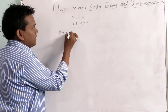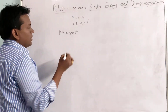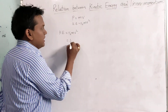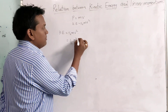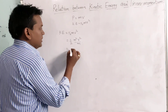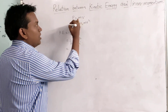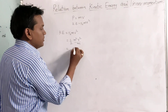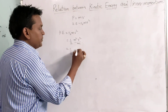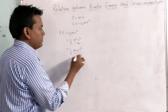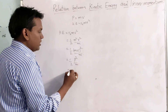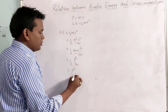We know that kinetic energy KE equals half mv squared. Now multiply and divide with m. By multiplying and dividing with m we will have m squared v squared upon m. Since P equals mv, we can write this as P squared. So we have half into mv whole squared upon m, which gives us P squared upon m, or P squared by 2m.